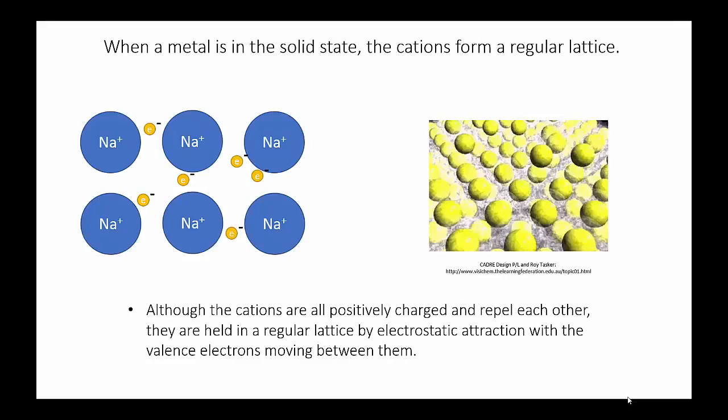We know that in metallic bonding the metal atoms lose their valence electrons and become ions. These ions arrange themselves into a regular lattice. The structure of the lattice is like that of an ionic solid, but all of the ions are positive.